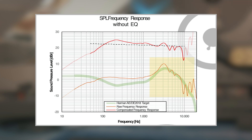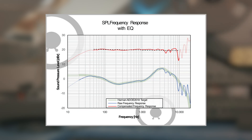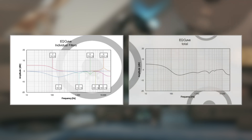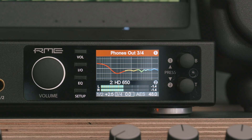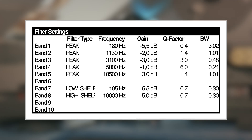The EQ proposed by Oratory will make the HD 650 match the Harman Target curve much better. The measured result is spot on to the target curve, and the difference shown in the red line is minimal. Each plot shows the frequency response of each single filter, and the right plot — EQ curve total — shows all of them active at the same time. This curve can be visually compared to the plot shown on the display of the ADI, so setup errors can be quickly detected. This table includes the filter settings which have to be programmed into the parametric equalizer of the ADI. Let's do this step by step.